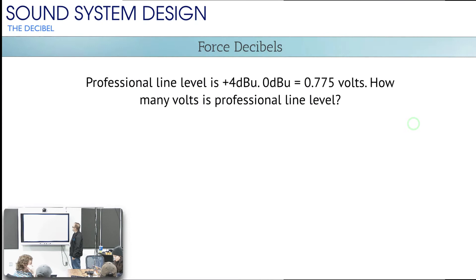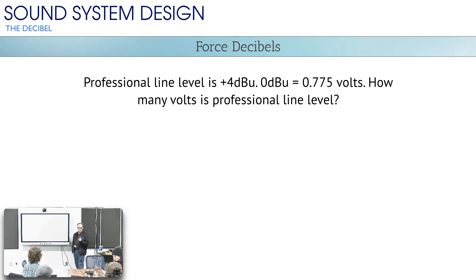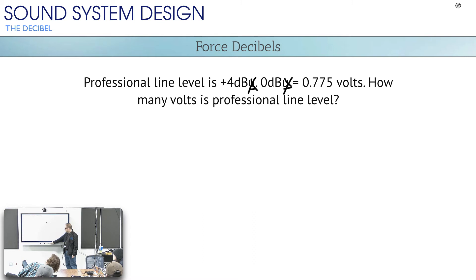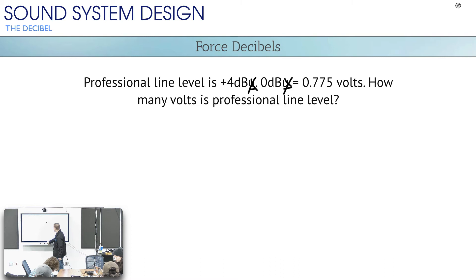Here's another example. Take this on faith for a moment — that little 'u' means something, which I'll explain later. But the good news is both values have it, so it doesn't matter in this context. Professional line level is a professional standard — it happens to be plus 4 dBu. And there's this thing called 0 dBu, which equals 0.775 volts — that's just a standard. Given that information, how many volts is professional line level?